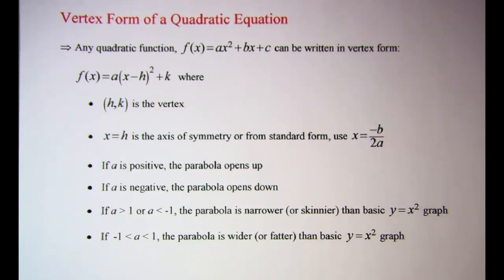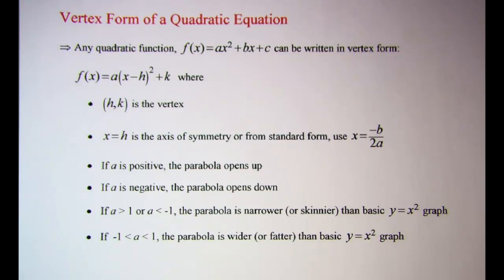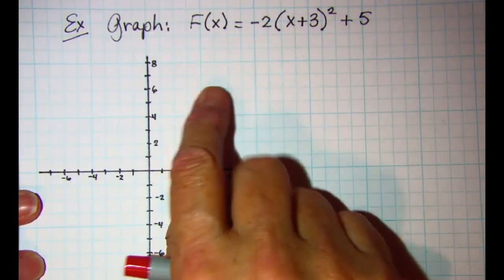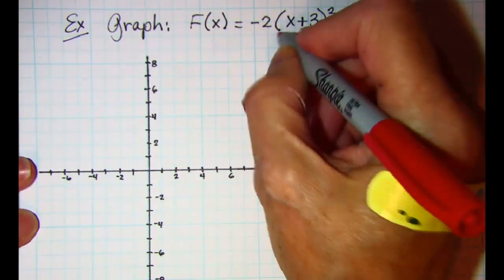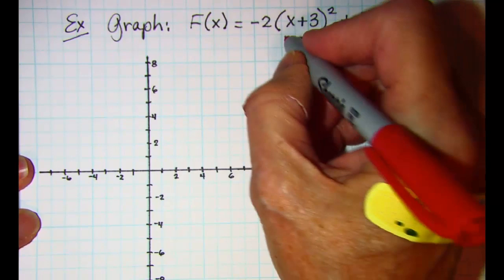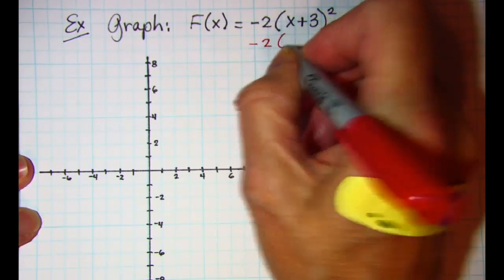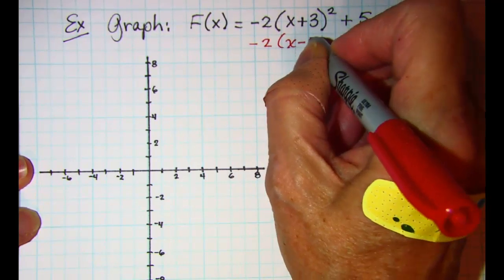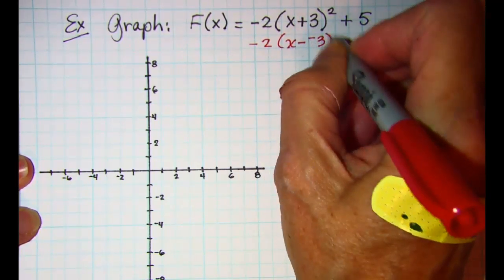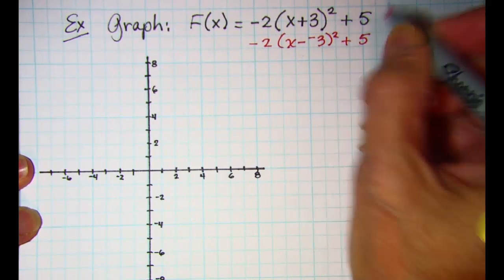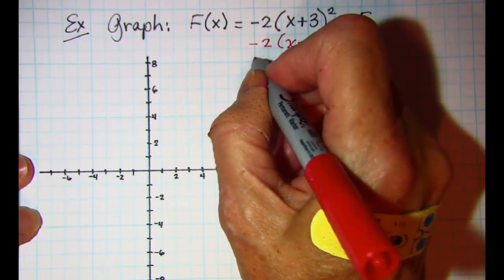Let's use this information to graph a parabola whose equation is in vertex form. In this equation, this can be rewritten as negative 2 times the quantity x minus negative 3 squared plus 5.